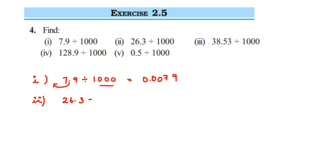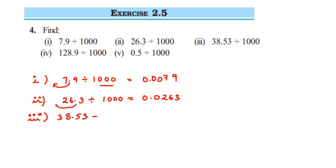For the second question: 26.3 divided by 1000. Three places to the left — we have a two-digit number before the decimal, so we put one more zero: the answer is 0.0263. Third question: 38.53 divided by 1000. Three places to the left, add one zero: the answer is 0.03853.